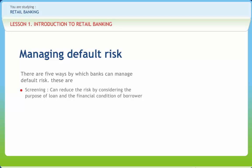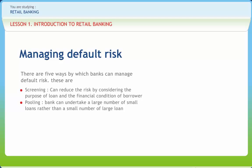The second strategy is pooling. Banks can undertake a large number of small loans rather than a small number of large loans. This is an application of the law of large numbers to the loan portfolio, which reduces the variability of loan loss and increases the predictability of loss through default.